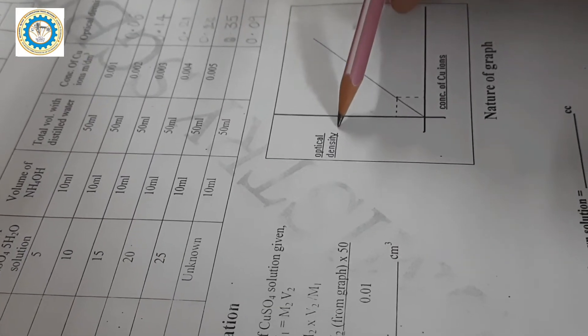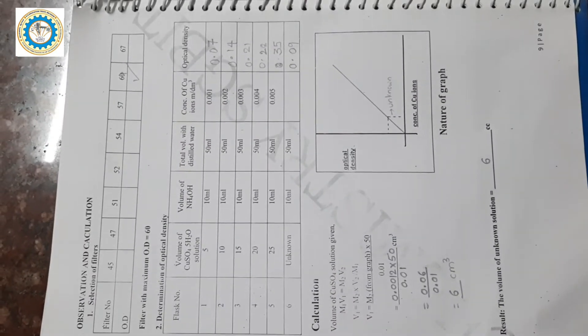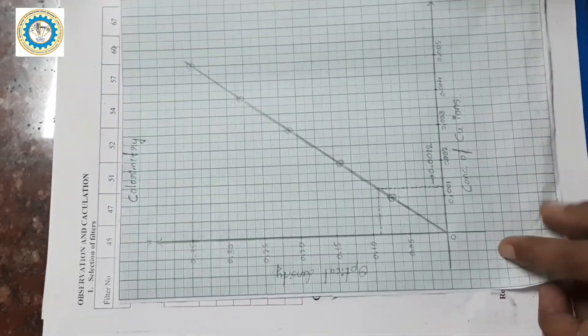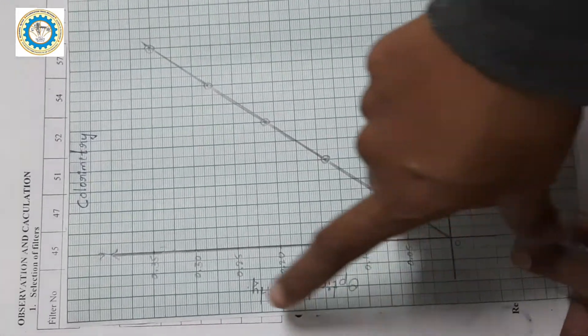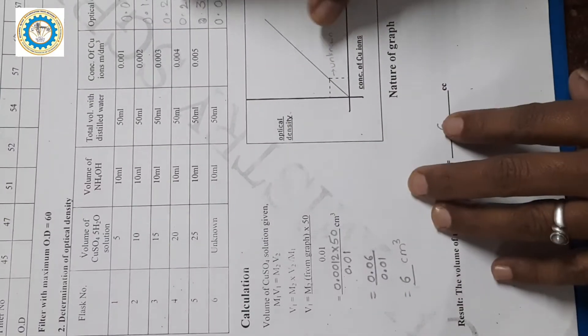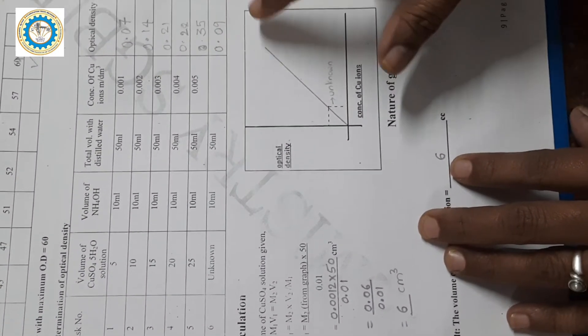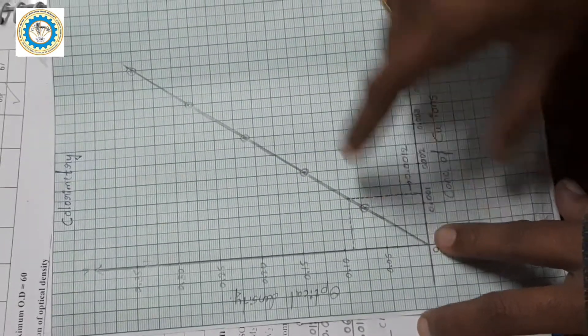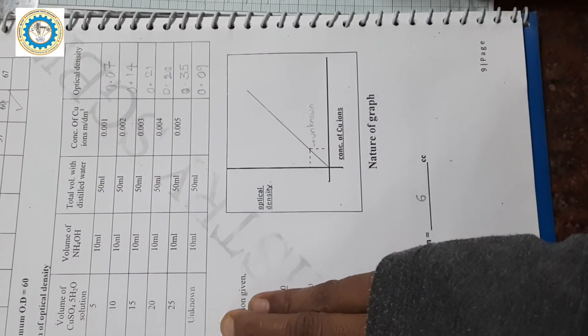Now we need to plot a graph of optical density versus concentration of copper ions. The nature of the graph will be linear. Here is the graph: concentration of copper ions against optical density. The readings are 7, 14, 21, 28, 35, and unknown is 09. We draw the calibration curve, then plot the unknown optical density as a dotted line. From there, we draw a perpendicular, and it cuts at 0.0012.